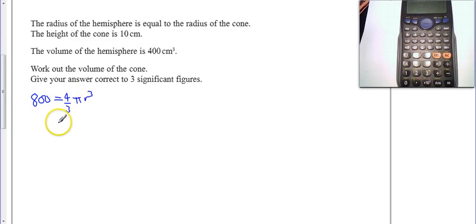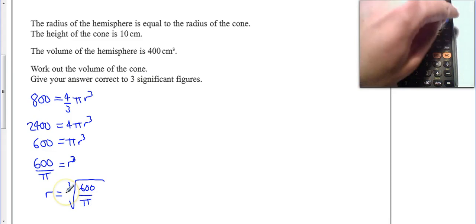If we rearrange this, 2400 equals 4π r³ after times both sides by 3. Divided by 4, that means 600 equals π r³, or 600 divided by π equals r³. So to find what r is, I need to find the cube root of 600 divided by π. Just on my calculator...